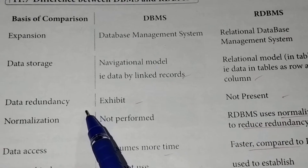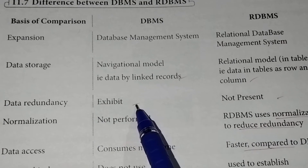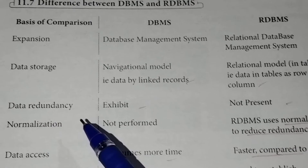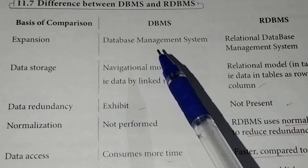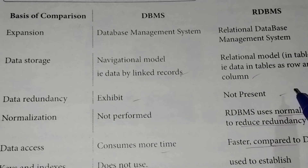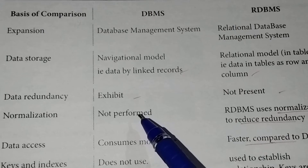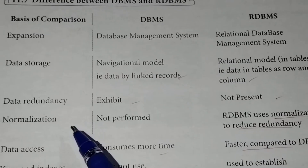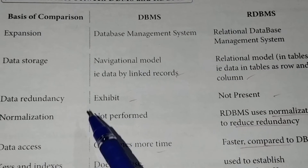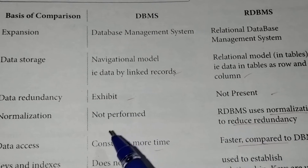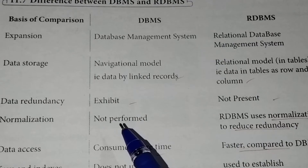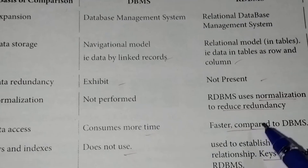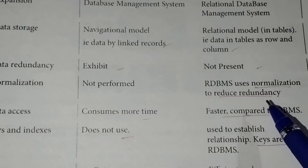Data redundancy exists in DBMS — redundancy means repeated data. In RDBMS, normalization is used to reduce redundancy. If you have repeated data, you can use normalization to reduce that redundancy.